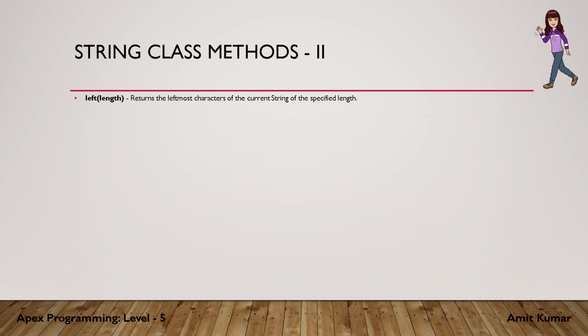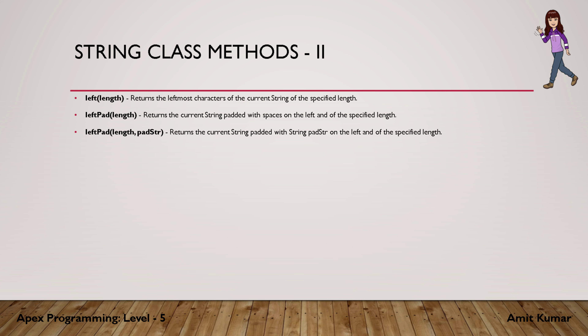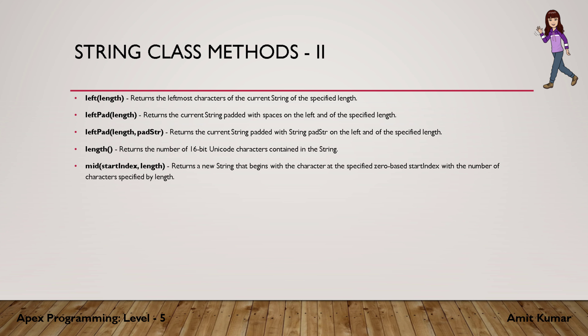The left method returns the leftmost characters of the current string of the specified length. leftPad returns the current string padded with spaces on the left of the specified length — so if the string is 5 characters and we specify length 10, the leftmost five parts will be padded with space. leftPad with a pad string pads with the specified string instead. The length method returns the number of characters in the current string. mid returns a new string beginning at the specified zero-based start index with the number of characters specified by length.